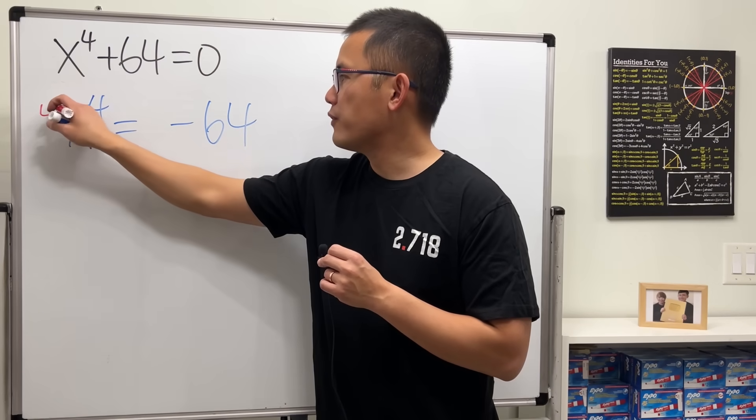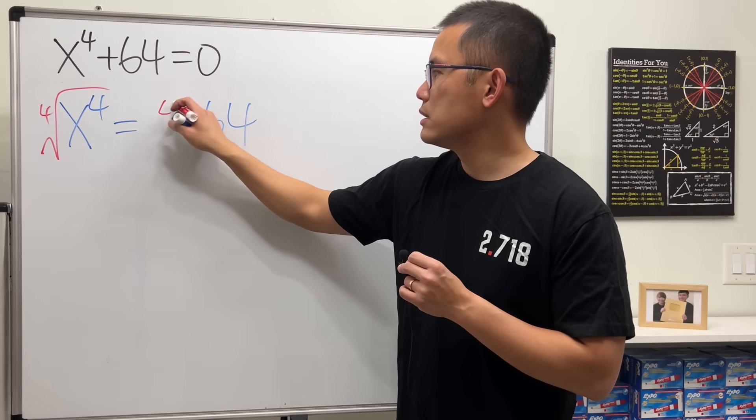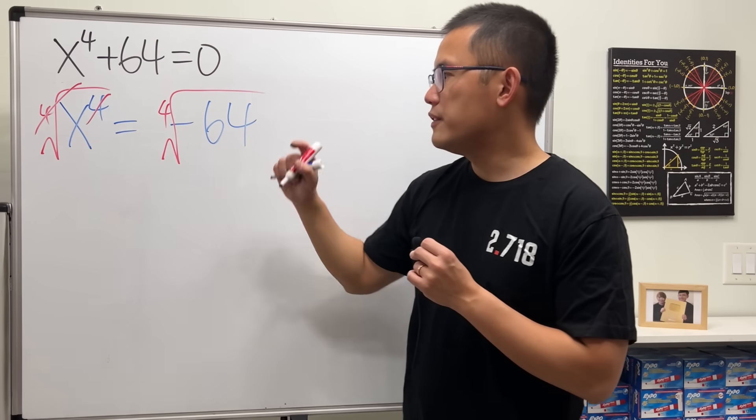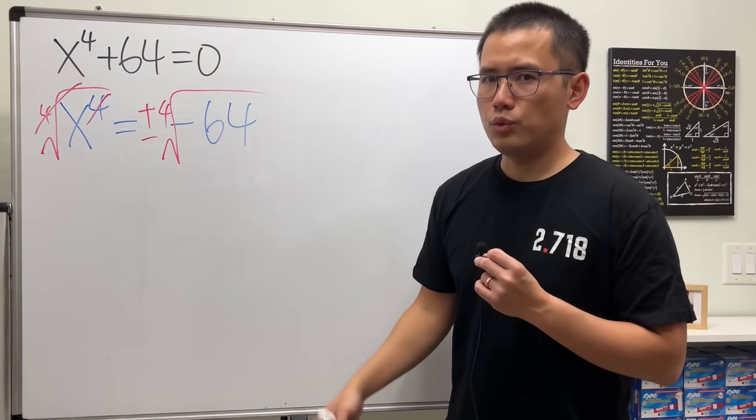And then just go ahead and take the fourth root to both sides. That way this and that can cancel. And because it's an even root, we should just put a plus or minus, right?